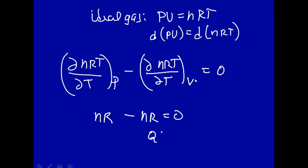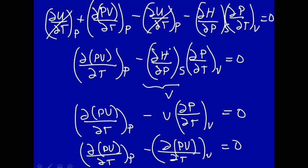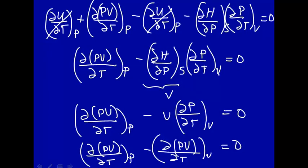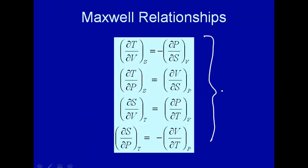So NR minus NR equals zero — QED, as mathematicians say when they've shown something. Note that I actually did not use a Maxwell relation to solve this; the key realization was from the previous lecture that how H changes with P at constant S is just volume. That's it for Maxwell relations. You don't have to memorize these — the exams are open book and open notes — you just have to know how to reference them.